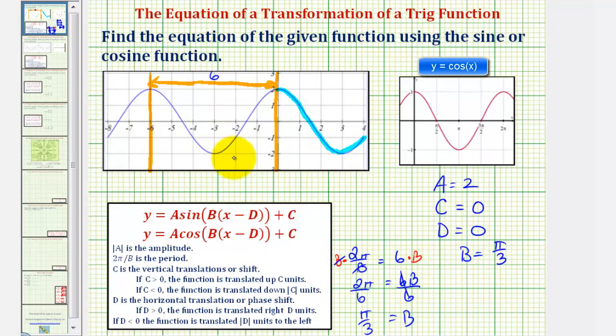we can now write the equation of our function. We would have y equals a, which is positive two, times cosine of, here we have b times the quantity x minus d.